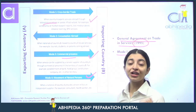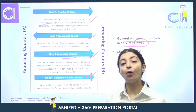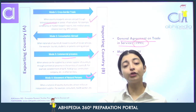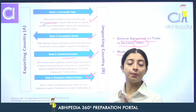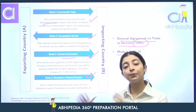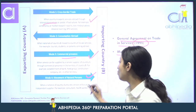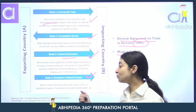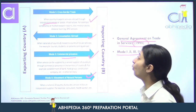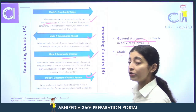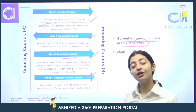Ab fourth kya hai? Movement of natural persons. Natural persons ki movement hai — that doctor flew to India to serve clients here. That is mode 4.